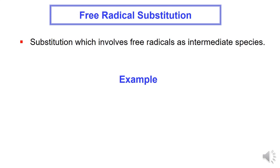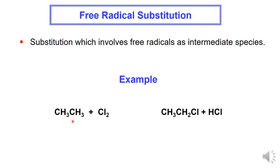A. Free radical substitution is a substitution which involves free radicals as intermediate species. Example: CH3-CH3 reacts with chlorine molecule under UV light. The free radical intermediate is generated from the chlorine molecule, and the product is formed where one hydrogen atom on CH3-CH3 is replaced by a free radical chlorine atom.